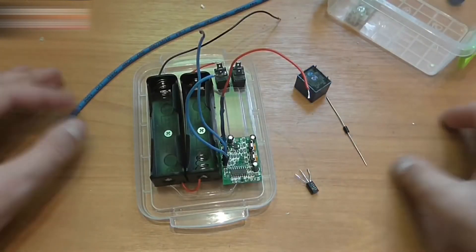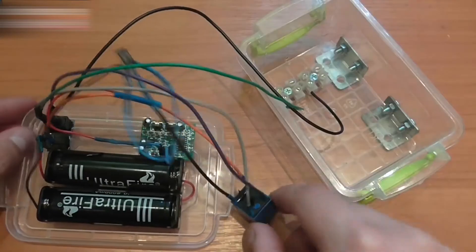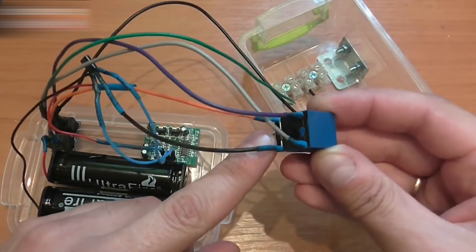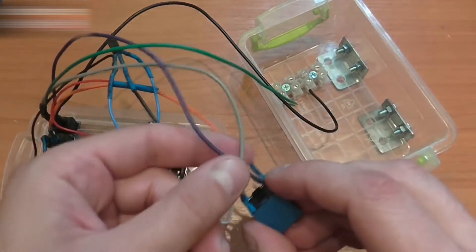Solder everything and insulate with a heat shrink tube. It should look like this. Here is the diode, here is the relay's contact.